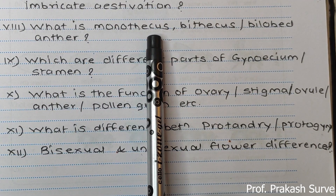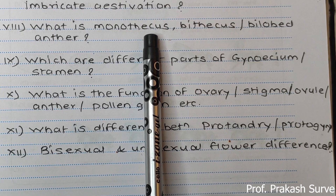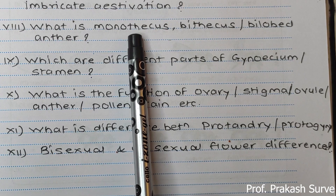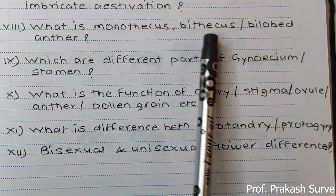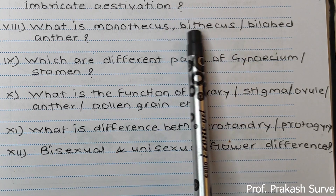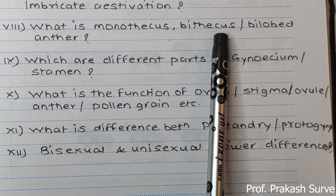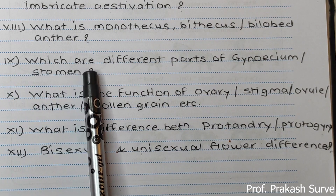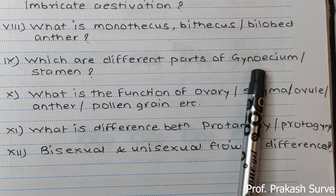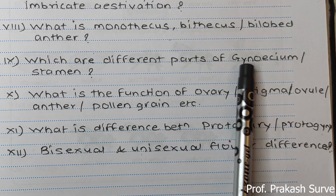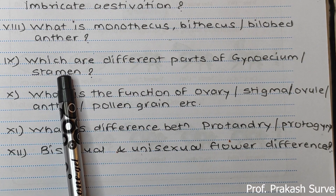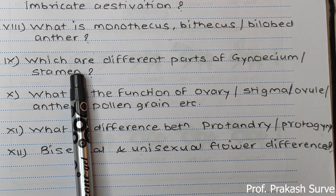What is monothecous? Monothecous means a single lobe — the anther in hibiscus has a single lobe, so it is monothecous. Bithecous means two lobes are present. What are the different parts of the gynoecium and stamen? Gynoecium consists of ovary, style, and stigma. Stamen consists of anther, connective, and filament.